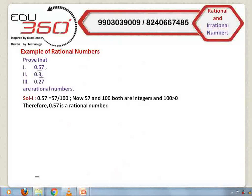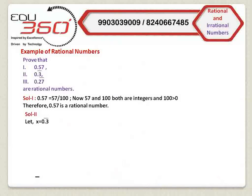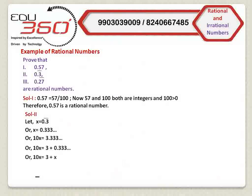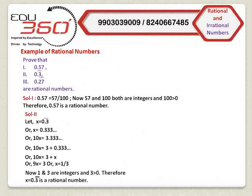Now come to the second problem. Let x equals 0.3 recurring. We can write x equals 0.333... Now multiply both sides by 10. That is, 10x equals 3.333... We can write 10x equals 3 plus 0.333. Now we can write 10x equals 3 plus x, because we have already assumed that 0.333... equals x. Therefore, we can write 9x equals 3, or x equals 1 by 3. Here we have proved that 0.3 recurring is a rational number, because 1 and 3 are integers and 3 is greater than 0.